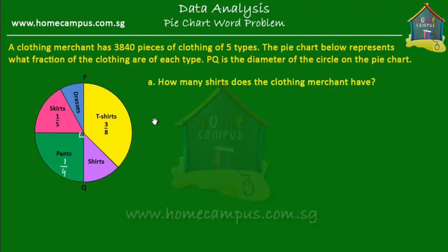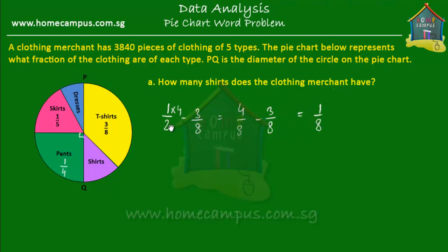So the t-shirts and the shirts together are one half. To find out what fraction of the clothing is shirts, you simply subtract the fraction that is t-shirts from one half. One half can be written as four eighths. Then you subtract three eighths from four eighths, and what you get is one eighth. You multiply top and bottom by four to get a common denominator of eight, then subtract.